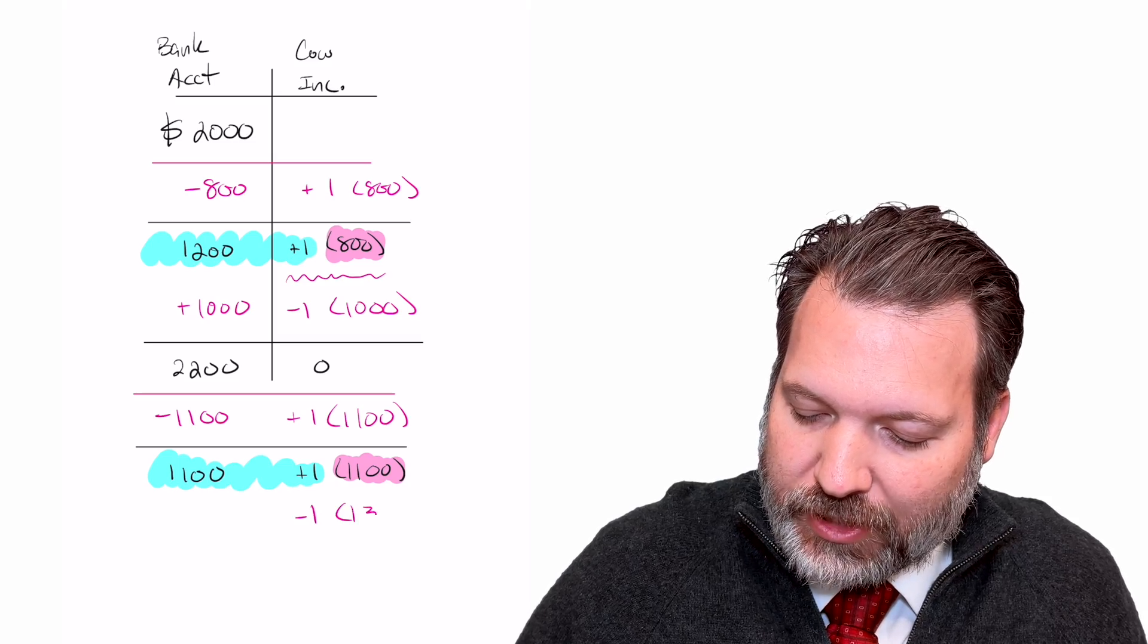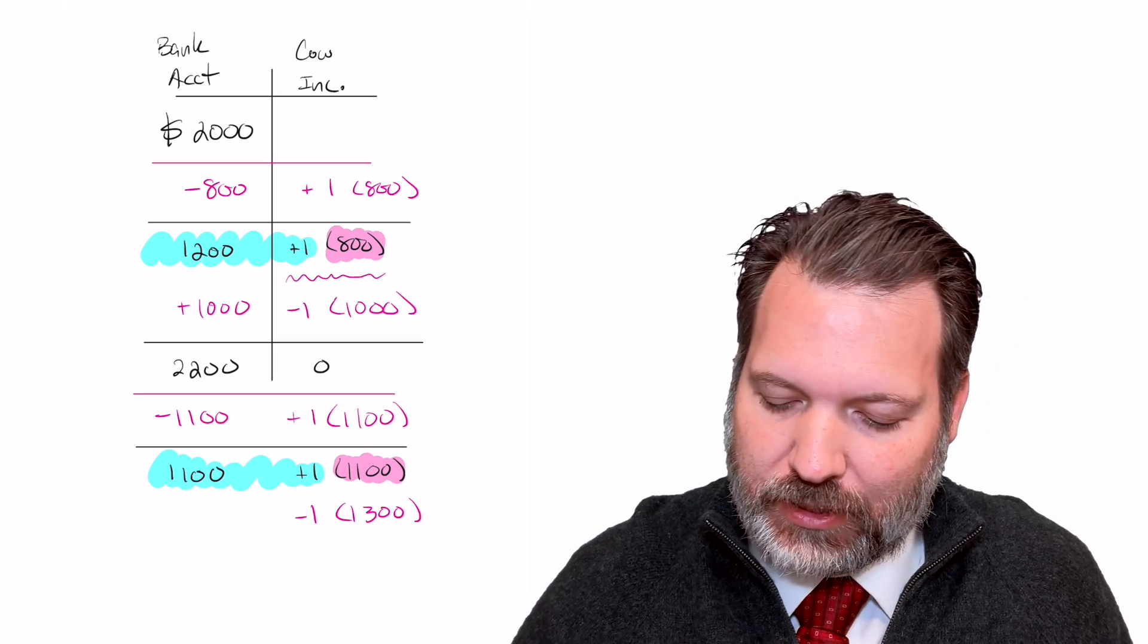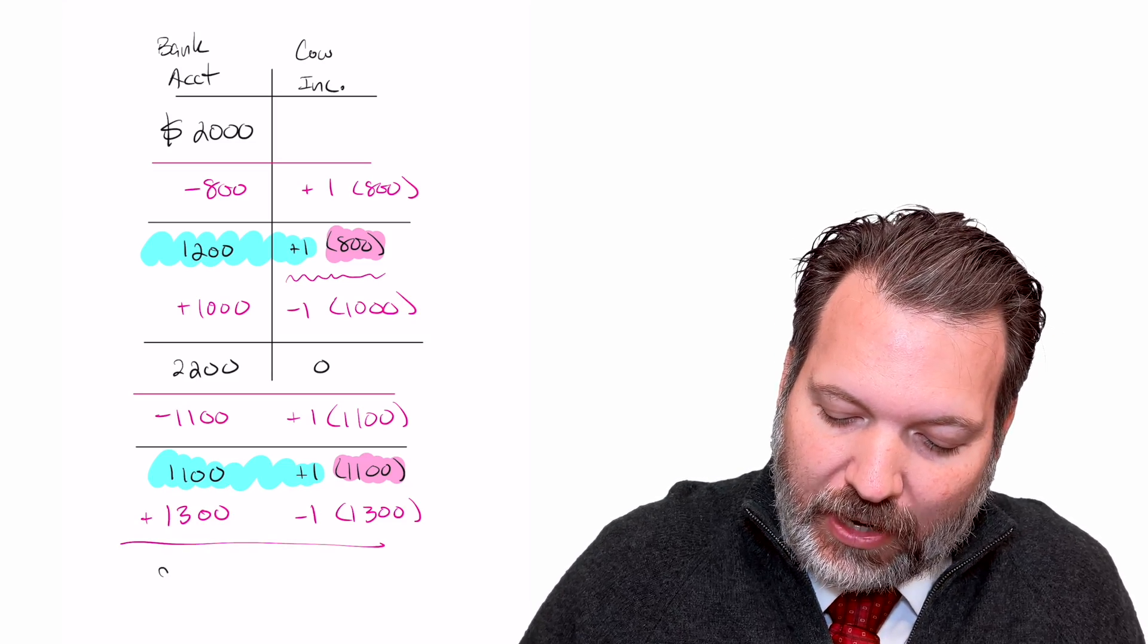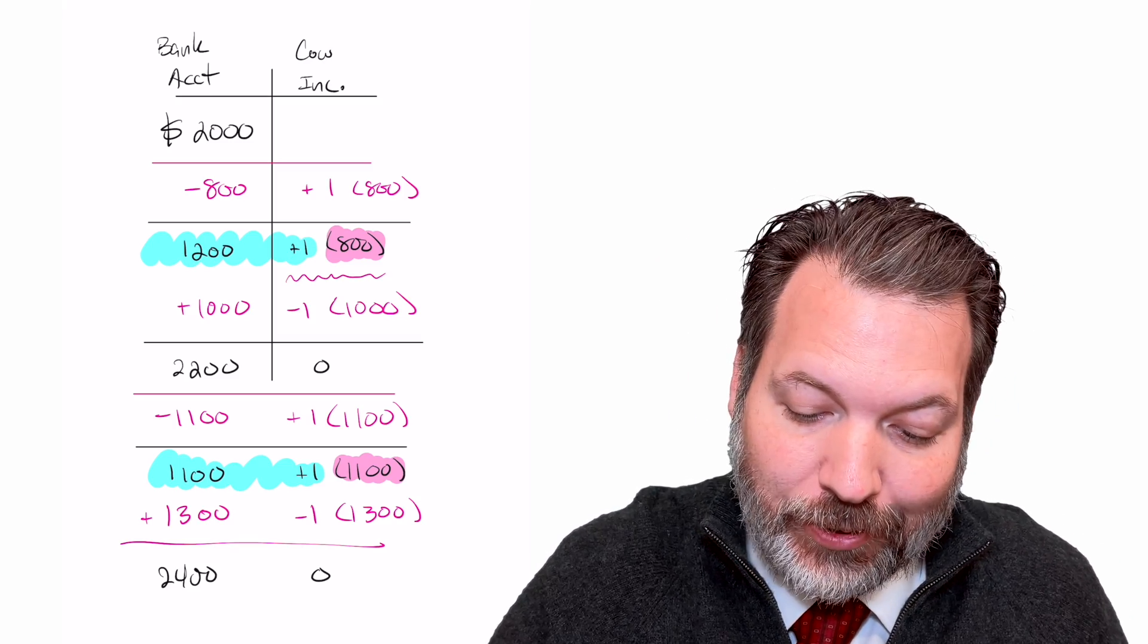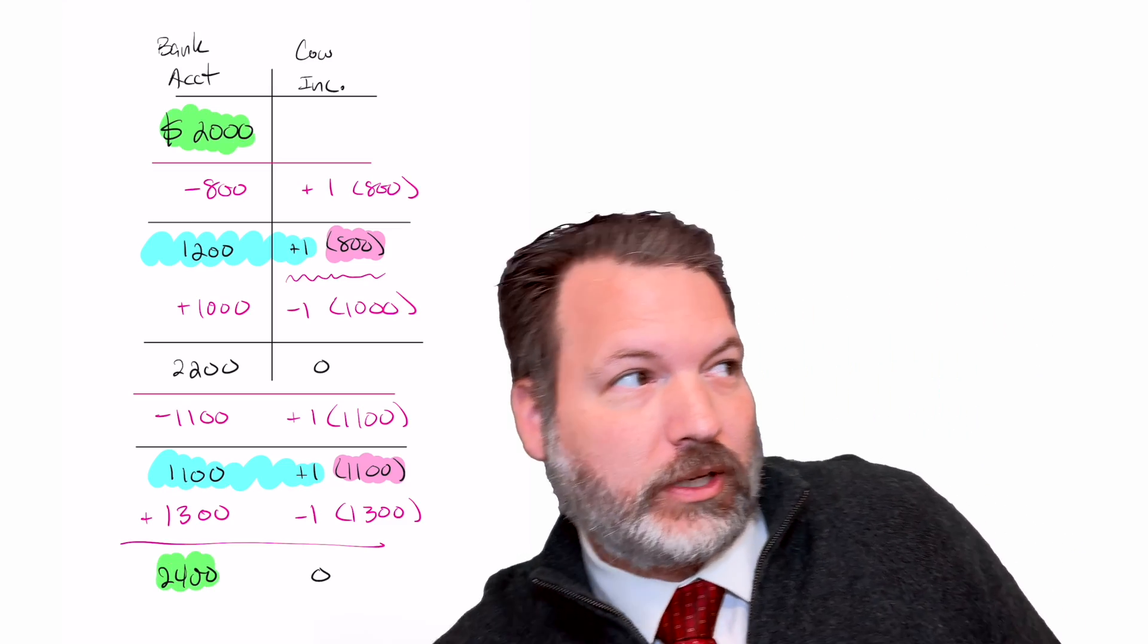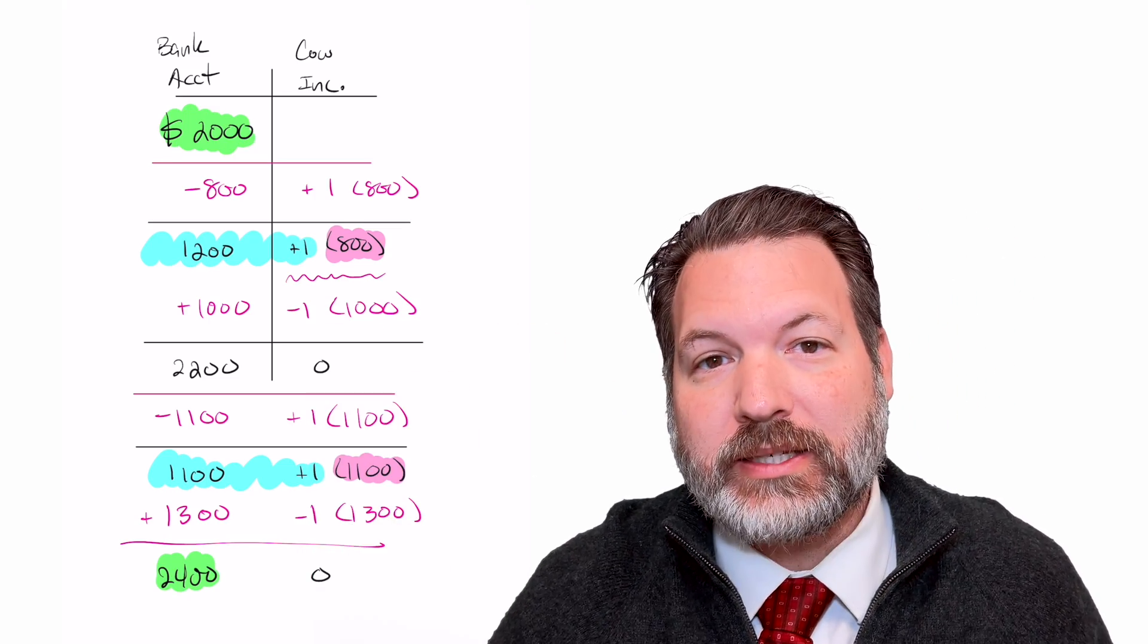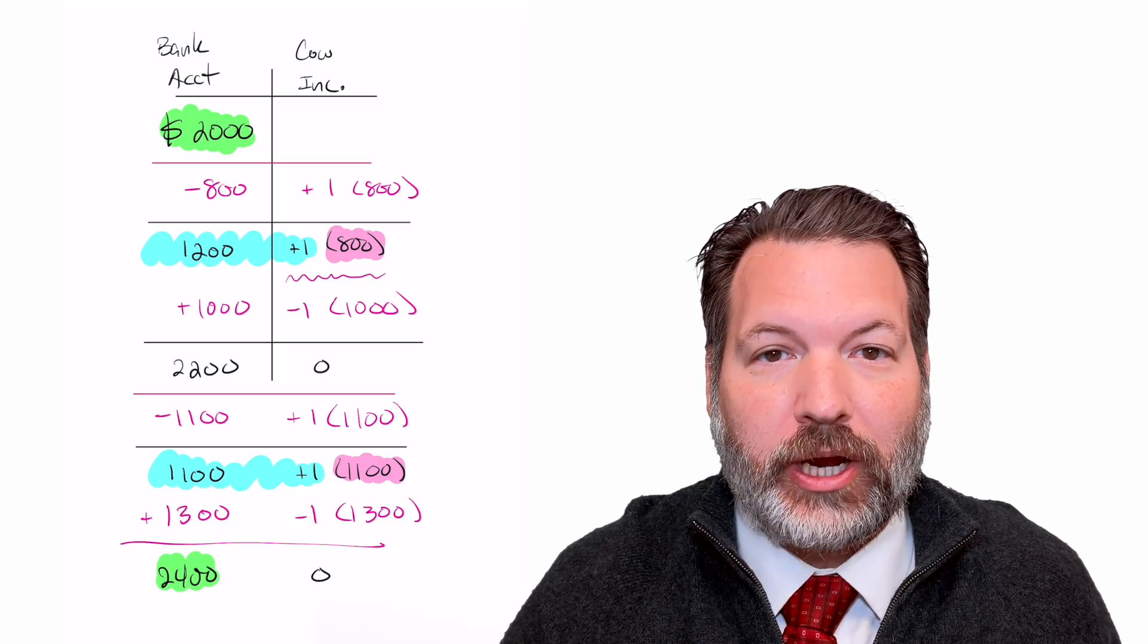Finally, Cow Inc. gets to $1,300 per share. And we think, okay, for sure, that's the best it's going to get. Let's sell that share in Cow Inc. Let's make $1,300. And that leaves us at $2,400 back with zero shares of Cow Inc. And so it's pretty clear at this point that, yes, we are $400 ahead of where we were at the beginning of this whole Cow Inc. odyssey because we've made $400 with the buying and selling of our Cow Inc. shares.